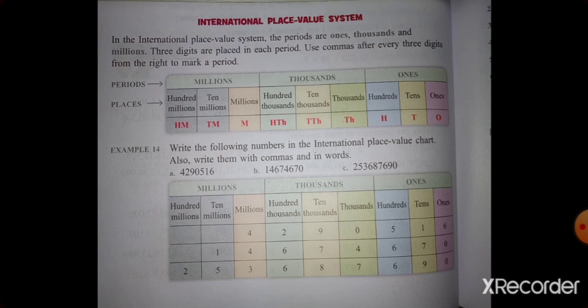In the International Place Value System, the periods are: Ones, Thousands, and Millions. You can see here a table or box — in this box they mention the periods marked as Millions, Thousands, and Ones. So periods are totally 3 parts: one part is Ones, another part is Thousands, and another part is Millions.